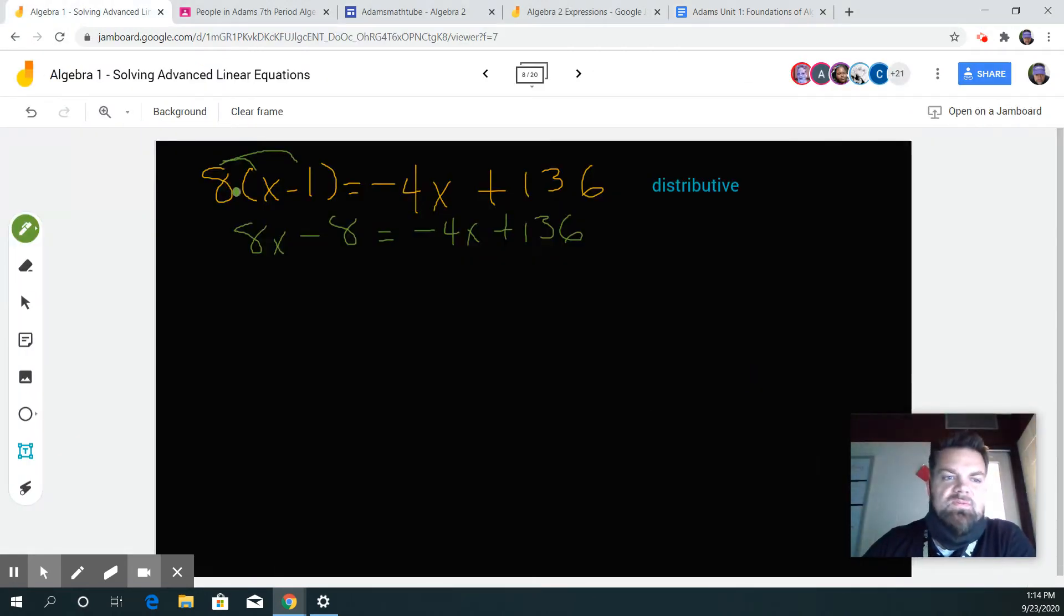In this example, the first step is we distributed the 8 through the parentheses using the distributive property, and that gives us this next line of 8x minus 8 is equal to negative 4x plus 136.